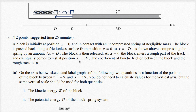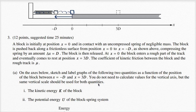The coefficient of kinetic friction between the block and the rough track is mu. On the axes below, sketch and label graphs of the following two quantities as a function of the position of the block between x equals negative d and x equals three d. You do not need to calculate values for the vertical axis, but the same vertical scale should be used for both quantities: the kinetic energy of the block and the potential energy of the block-spring system.